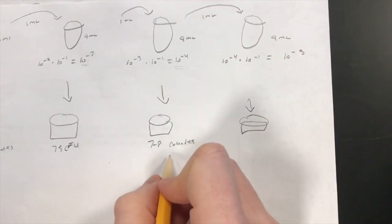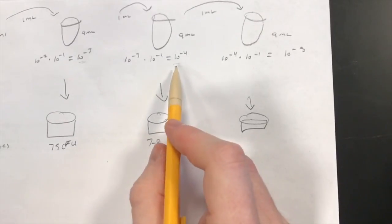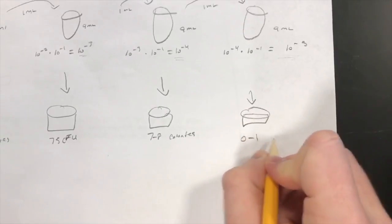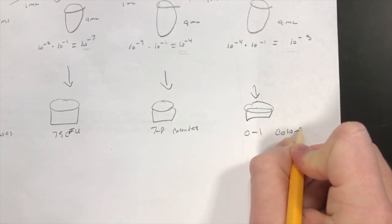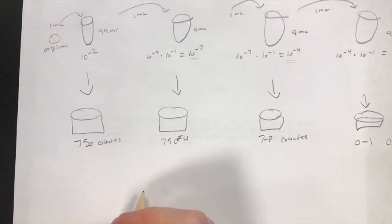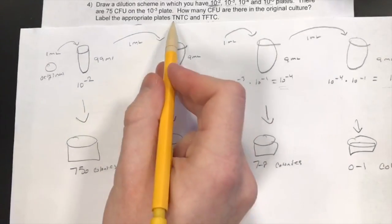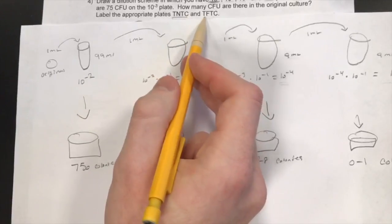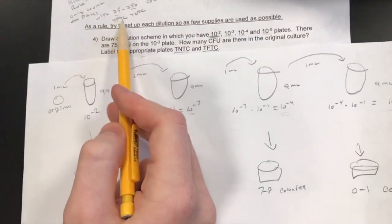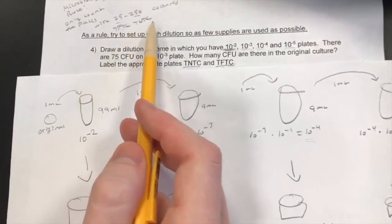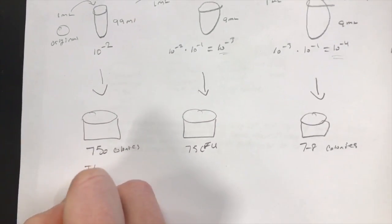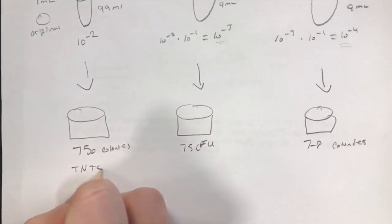To go in the other direction — from 10 to the negative 3 to 10 to the negative 4 — we move the decimal place, and it would be around 7 to 8 colonies. This isn't exact; this is approximate. And to get from 7 to 8 colonies on the 10 to the negative 4 to the 10 to the negative 5, it would be about 0 to 1 colonies. From here we can label these TNTC, too numerous to count, and TFTC, too few to count. Remember the rule: below 25 is too few to count and above 250 is too numerous to count. So with the 750 colonies plate, it's clearly above 250, so it's TNTC.